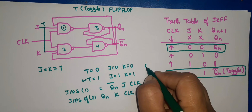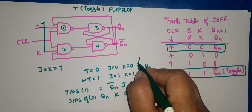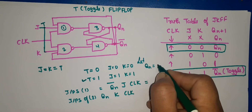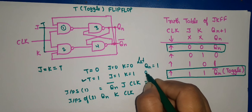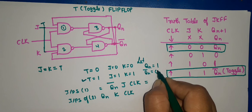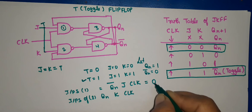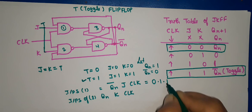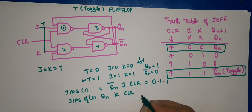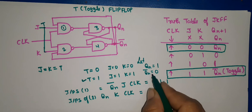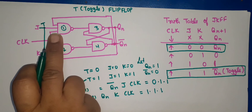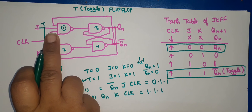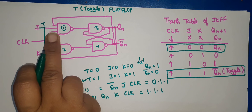Let QN be equal to 1. If QN is 1, then QN bar will be 0. So for gate 1: inputs are QN bar = 0, J = 1, and clock = 1. For gate 2: inputs are QN = 1, K = 1, and clock = 1. These are NAND gates. What is the property of a NAND gate? If any input is 0, the output will be high.